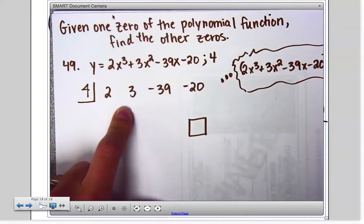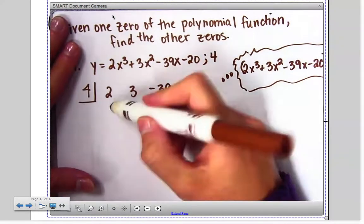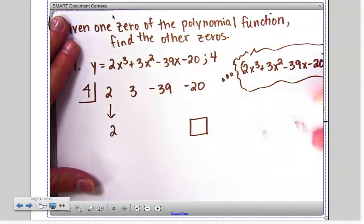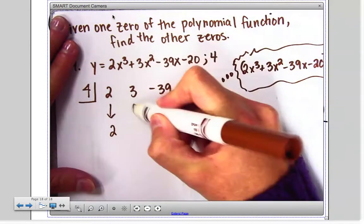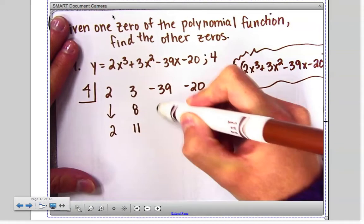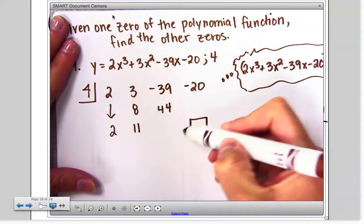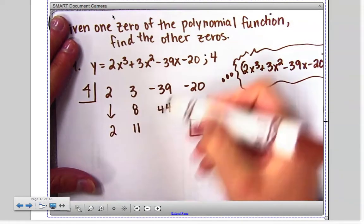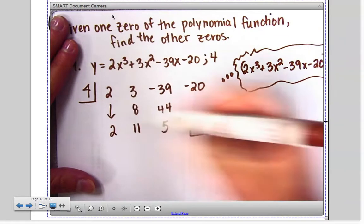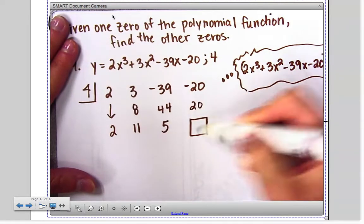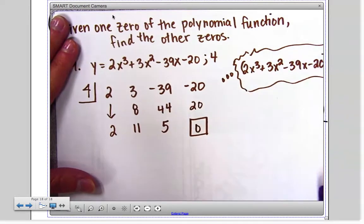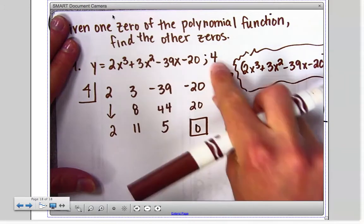So what happens here if I do the process of dropping that down and multiplying and adding and multiplying, it's going to be five. I get zero there, which is what we knew would happen because the problem told us that was the x-intercept to begin with.